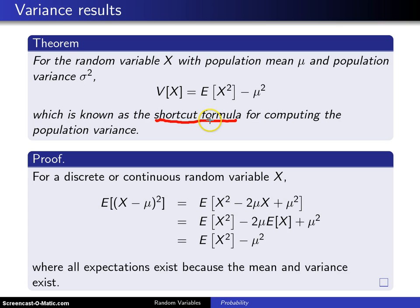The reason it's known as the shortcut formula is sometimes this is easier to compute than the definition of the variance of X for many distributions.